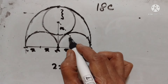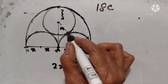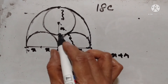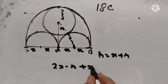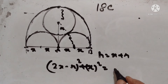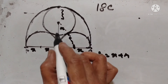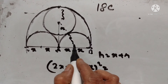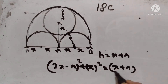This forms a right-angle triangle. The hypotenuse is equal to X plus R. So, applying Pythagoras' theorem, hypotenuse squared equals the sum of squares of the other two sides: (2X minus R) squared plus X squared equals (X plus R) squared.